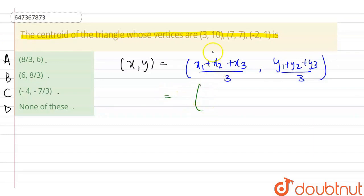Now, we'll substitute the values: x1 = 3, x2 = 7, and x3 = -2. Similarly, y1 = 10, y2 = 7, and y3 = 1.